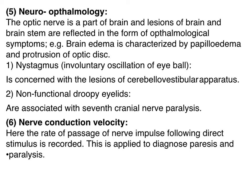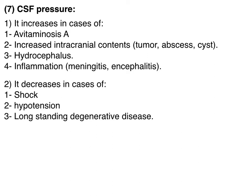Non-punctional droopy eyelids are associated with certain cranial nerve paralysis. Number six: nerve conduction velocity — the rate of passage of nerve impulse following direct stimulus is recorded, applied to diagnose paresis and paralysis. Number seven: cerebrospinal fluid pressure — it increases in cases of vitamin A deficiency, increased intracranial contents such as tumor, abscesses, hydrocephalus, congenital inflammation, meningitis, encephalitis, shock, hypotension, and long-standing degenerative disease.